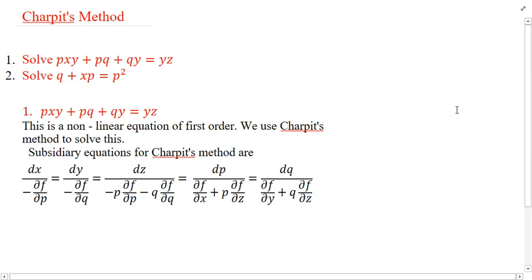For Charpit's method, we first write the subsidiary or auxiliary equations: dx by minus fp equals dy by minus fq equals dz by minus p·fp minus q·fq equals dp by fx plus p·fz equals dq by fy plus q·fz.